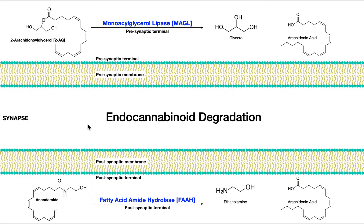Anandamide is taken up into the postsynaptic cell — so there's a division of labor there. Anandamide is metabolized mainly by FAAH, fatty acid amidohydrolase. What this enzyme does is it takes this bond right here — it's an amide, not an ester — and splits it through hydrolysis. One of the products is the head group, ethanolamine. Ethanolamine will be reused to make more phosphatidylethanolamines. And again, we get back arachidonic acid.